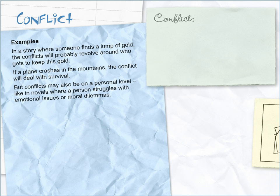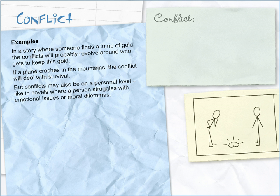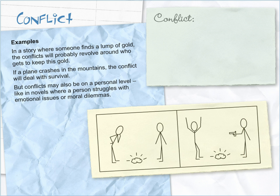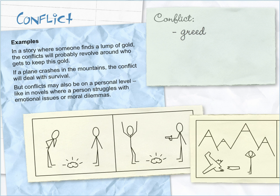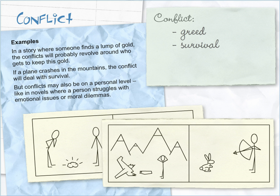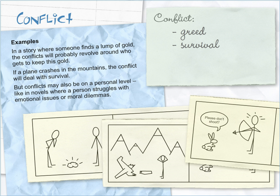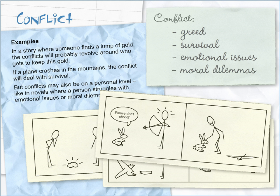Examples. In a story where someone finds a lump of gold, the conflicts will probably revolve around who gets to keep this gold. If a plane crashes in the mountains, the conflict will deal with survival. But conflicts may also be on a personal level, like in novels, where a person struggles with emotional issues or moral dilemmas.